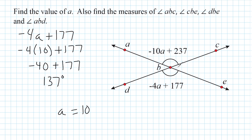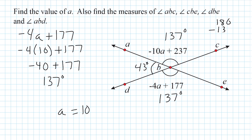So this angle has an angle measure of 137 degrees, which means the vertical angle opposite also has a measure of 137 degrees. The adjacent angle is the supplement to 137 degrees, so it should add to 137 to make 180. We take 180 minus 137, which gives us 43 degrees. And because that adjacent angle is 43 degrees, the one directly across is also 43 degrees, since they are vertical angles.